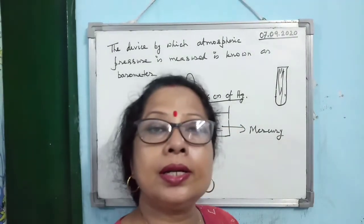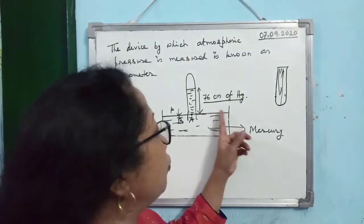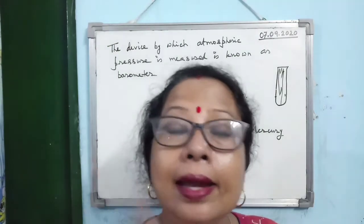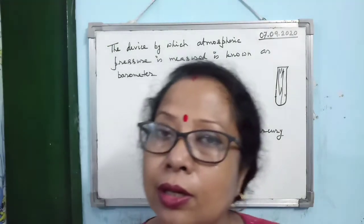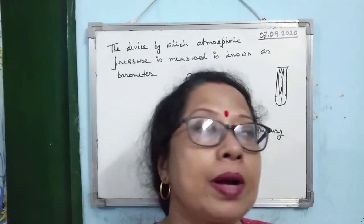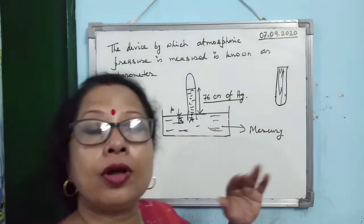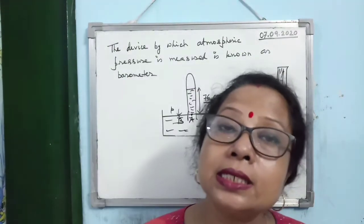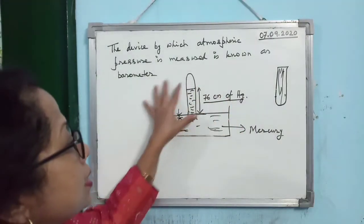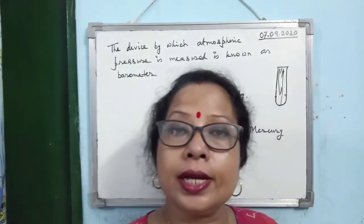The simple barometer has disadvantages: the open surface allows dust and impurities to accumulate, causing errors in pressure readings. Also, being made entirely of glass, it is difficult to carry and not easily portable. To overcome this, the entire system is enclosed in a closed system called the Fortin barometer.